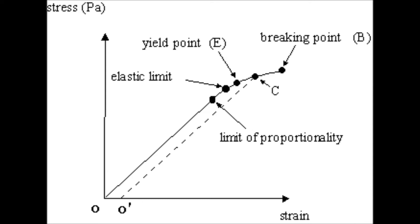The next point along is the yield point. The yield point is when the material suddenly starts to stretch without any extra load. It is the stress at which a large amount of plastic deformation can take place with a constant or reduced load — you don't even need to increase the mass on the spring; it will suddenly extend because you've pushed it too far.